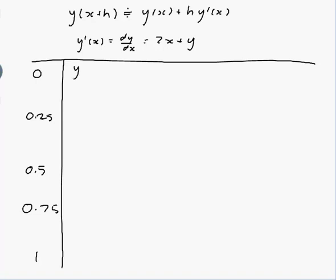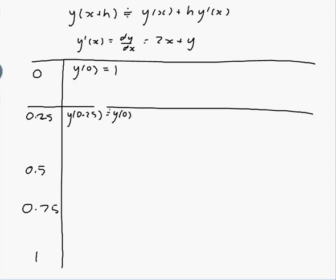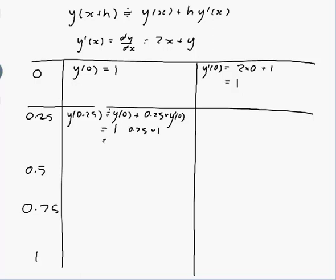So, I'm going to need to know what y of 0 is, and on my sheet it tells me it was 1. And then I use the value of y of 0 to find the value of y of 0.25. So it would be y of 0, well, approximately, plus h, which is 0.25, times y dashed of 0. So I need to know what y dashed of 0 is. y dashed of 0 is equal to 2 times 0 plus y, and y of 0 was 1. So this would be equal to y of 0, which is 1, plus 0.25 times y dashed of 0, which is 1, which is 1.25.